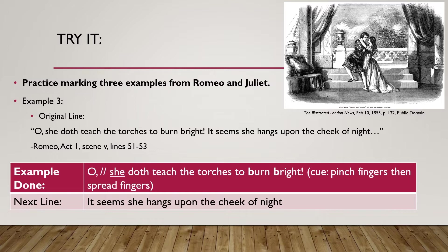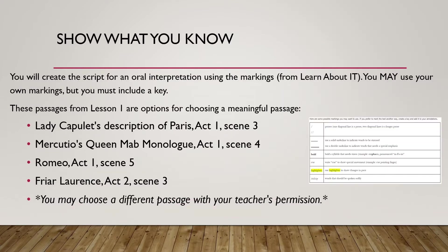I'll give you a moment to try the next line. For this show-what-you-know, you are asked to create a script for an oral interpretation using the markings from the lesson, or creating your own markings and including a key. Here are some passages from lesson one that are options. If you are completing the print pathway, the passage has been chosen for you. If you are completing the digital pathway, you will want to choose from one of these, or you may choose a different passage with your teacher's permission. Be sure to read your teacher's special directions about how many lines you need to complete.